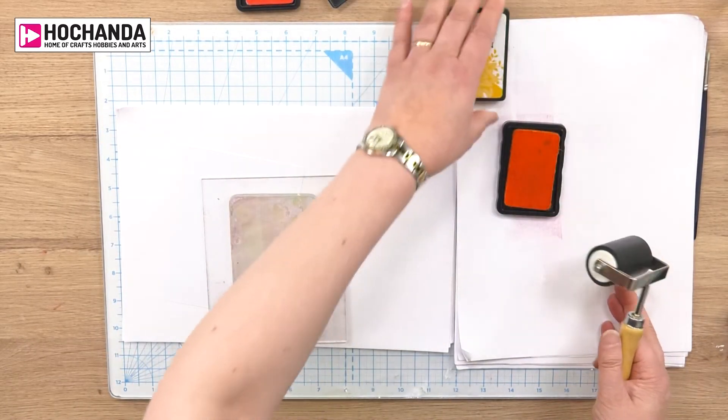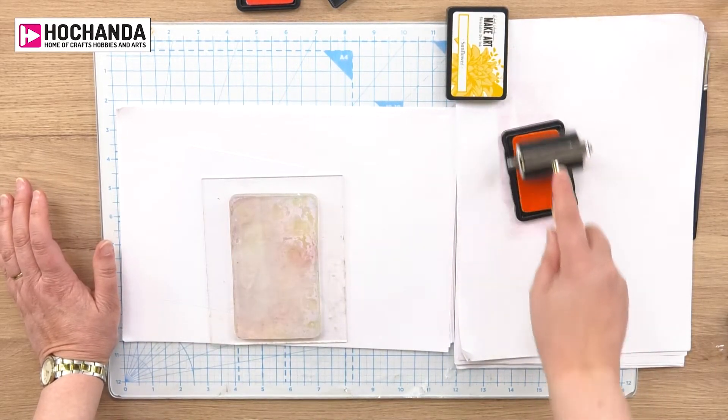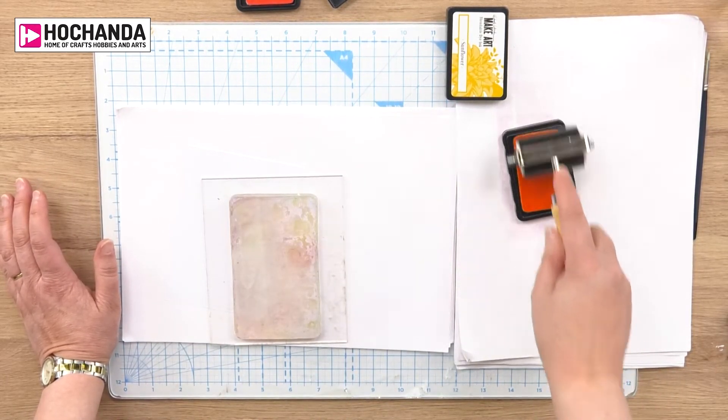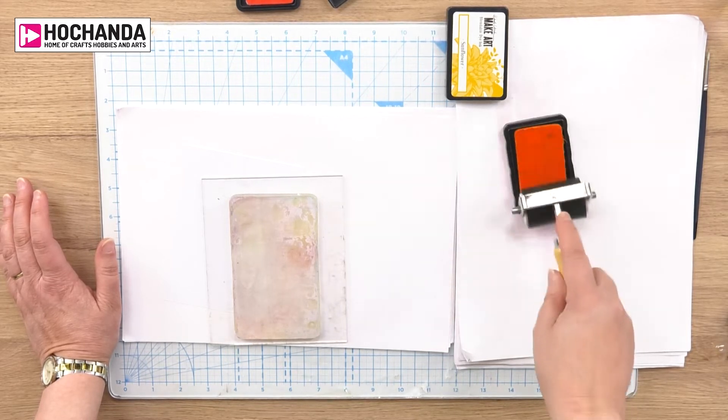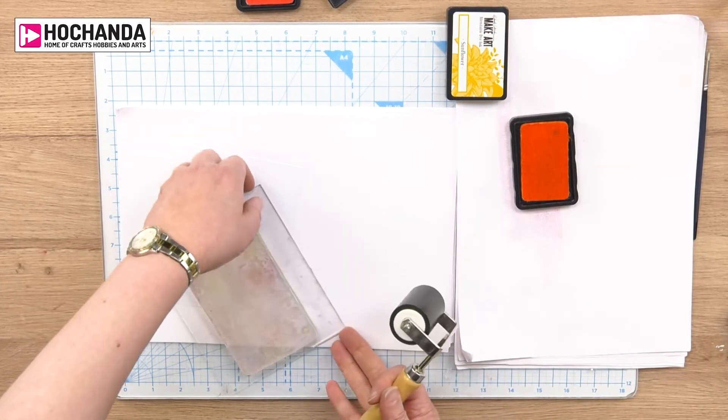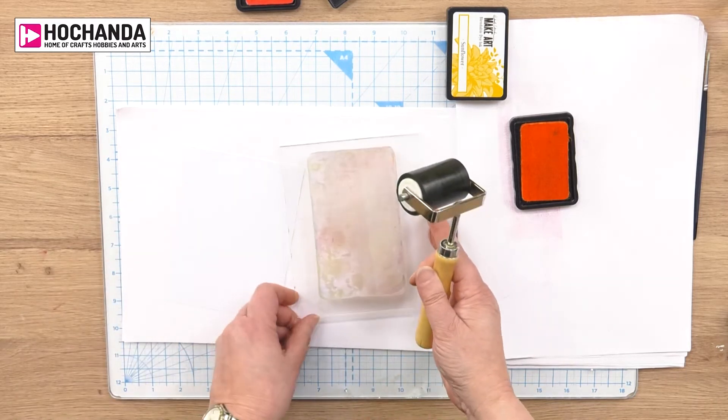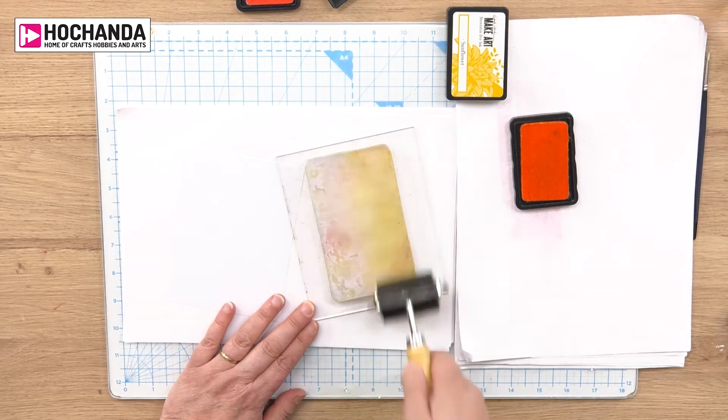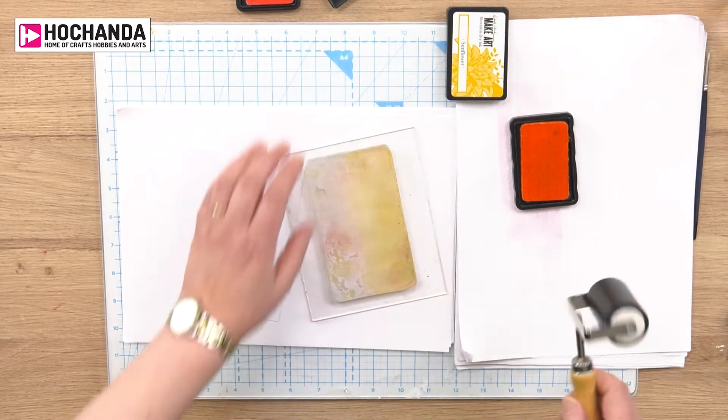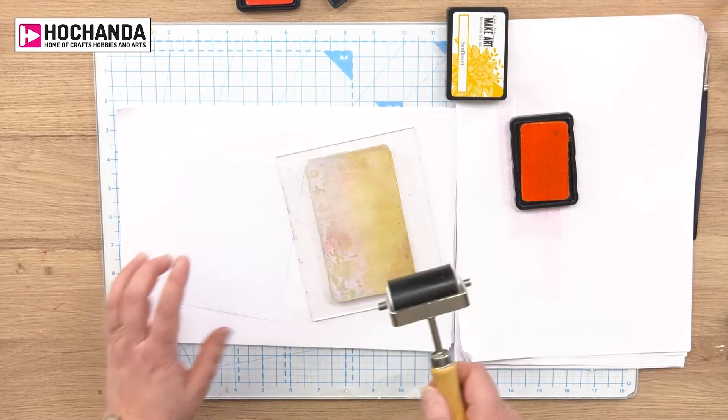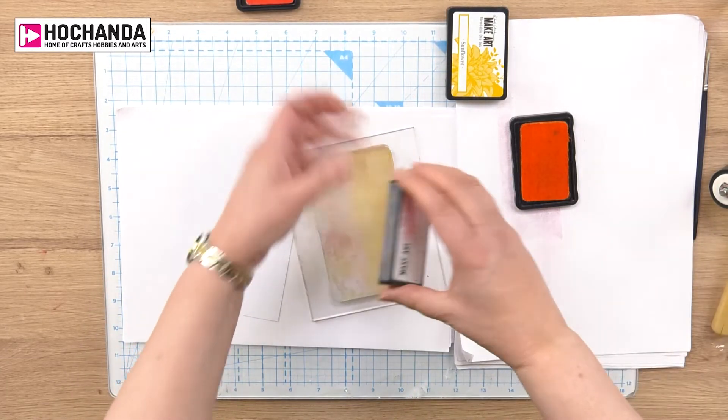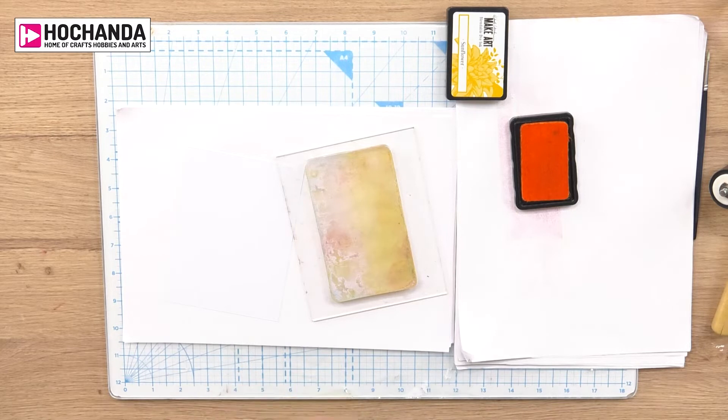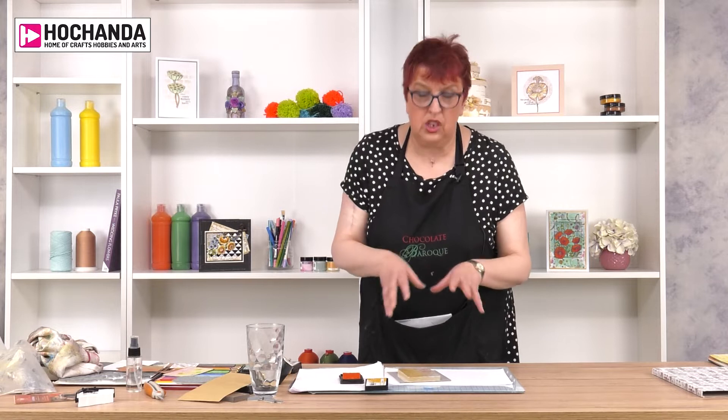Now I'm going to take the sunflower, and again just gently rolling up and down. Turn the plate round so you're always rolling across. Now that's a much stronger color. Light rolling. One thing about your jelly plate is it's made from specialist material so never use anything harsh like metal or knives that can cut into it because you will destroy the structure of the plate.